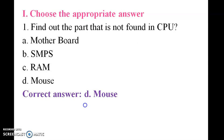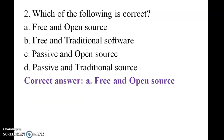Motherboard, SMPS, RAM, and mouse. You know motherboard, SMPS, RAM are related to the CPU, but mouse is not. The answer is mouse. Which of the following is correct?